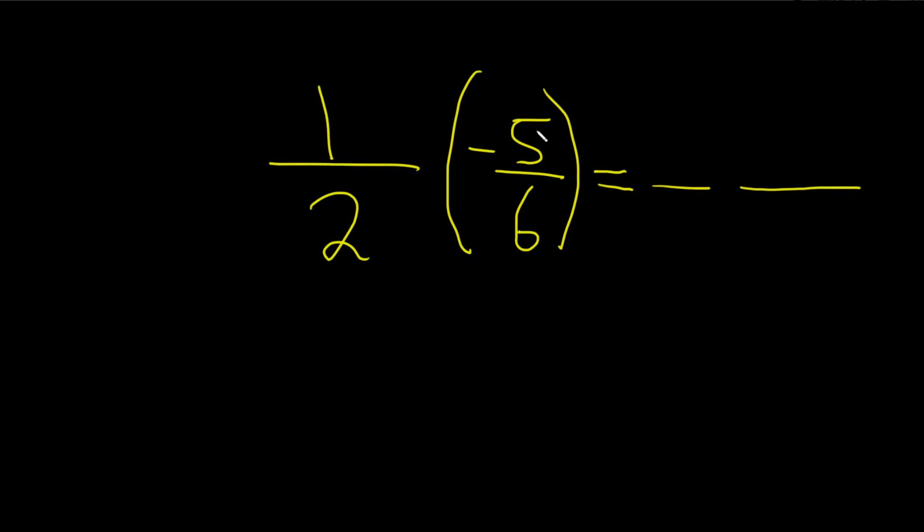And then you look to see if stuff cancels. You can't really simplify the 2 and the 5, and you can't really simplify the 1 and the 6. Look at these diagonal terms. So now you just multiply straight across. 1 times 5 equals 5. 2 times 6 equals 12.